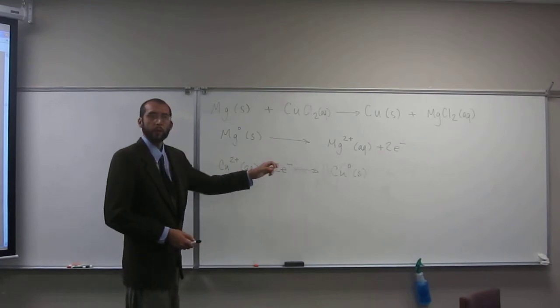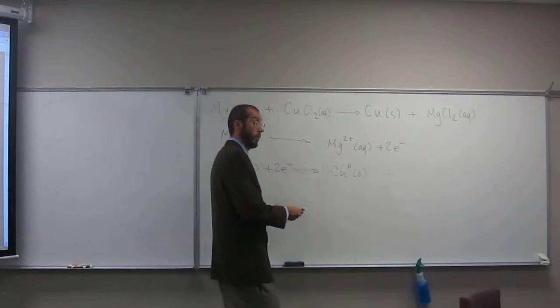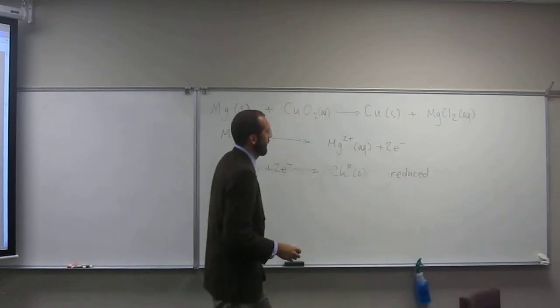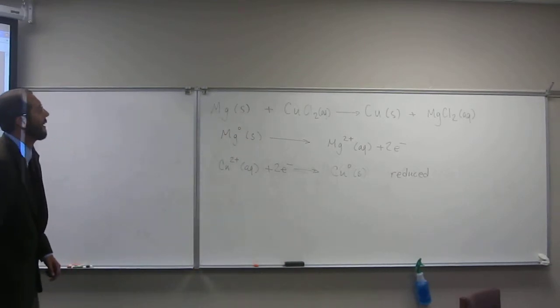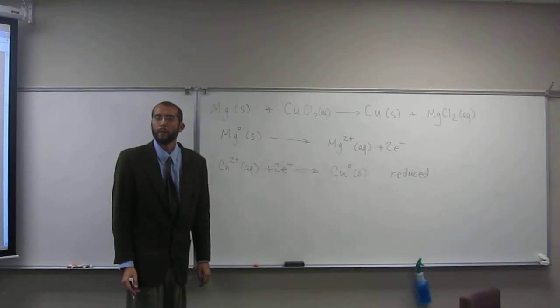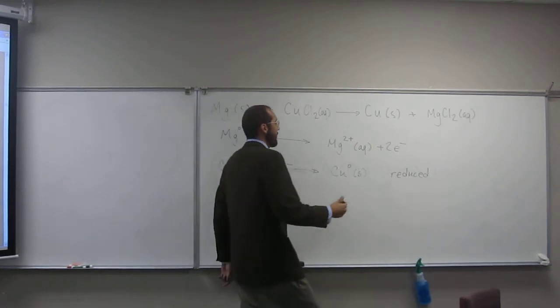Copper. Copper gets reduced. So copper gets reduced, so magnesium must get what? Oxidized. Oxidized. So they're opposite of each other.